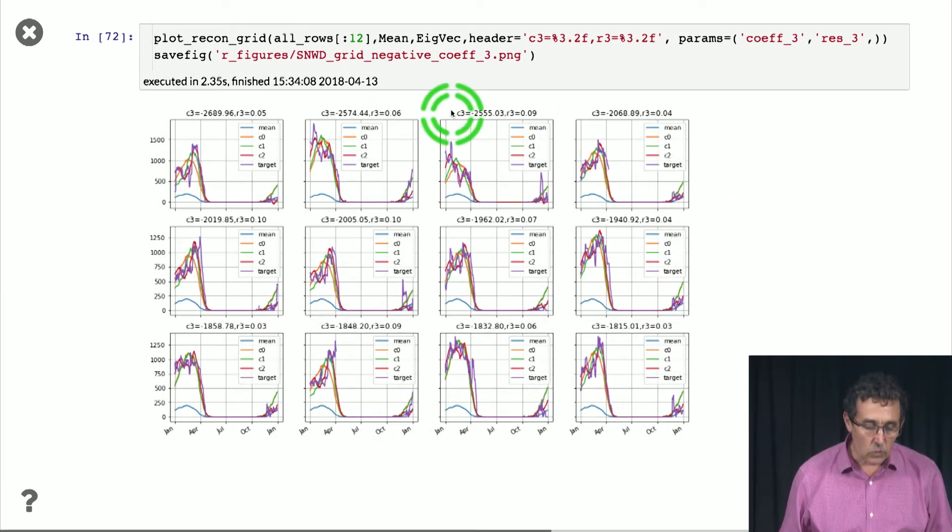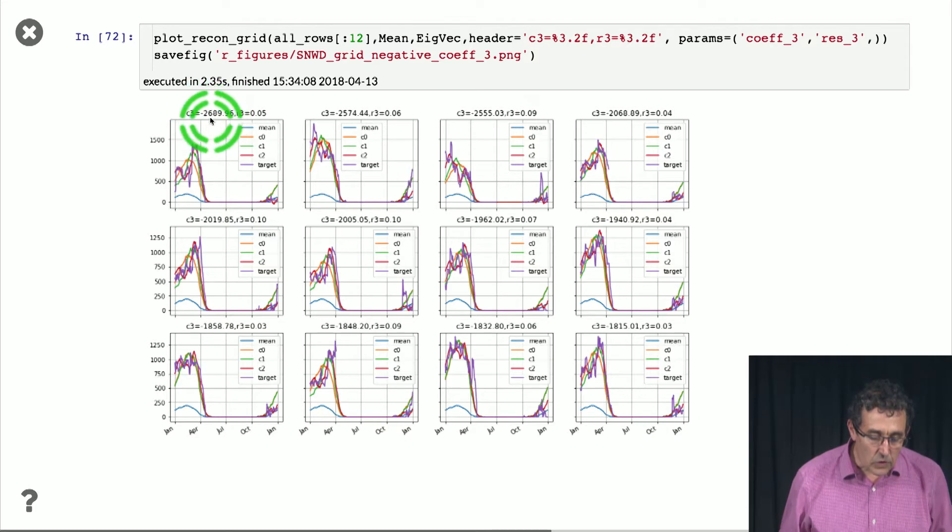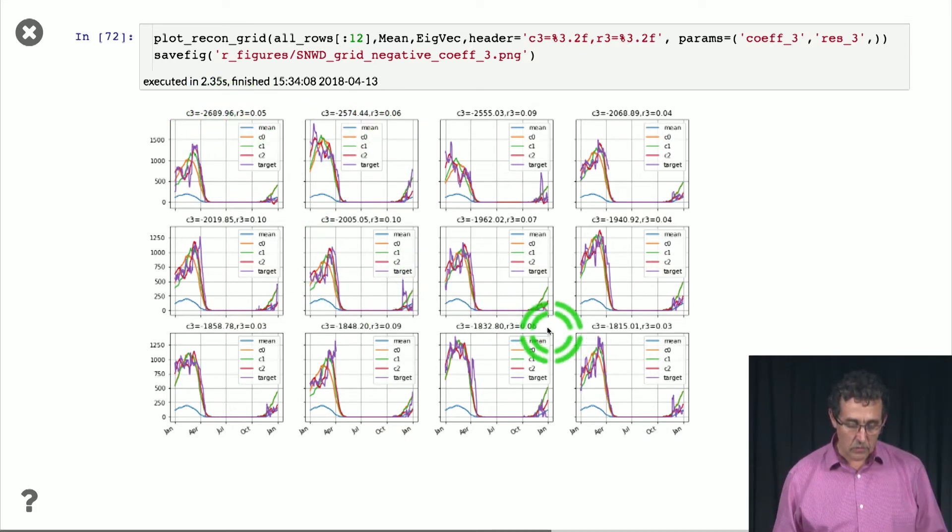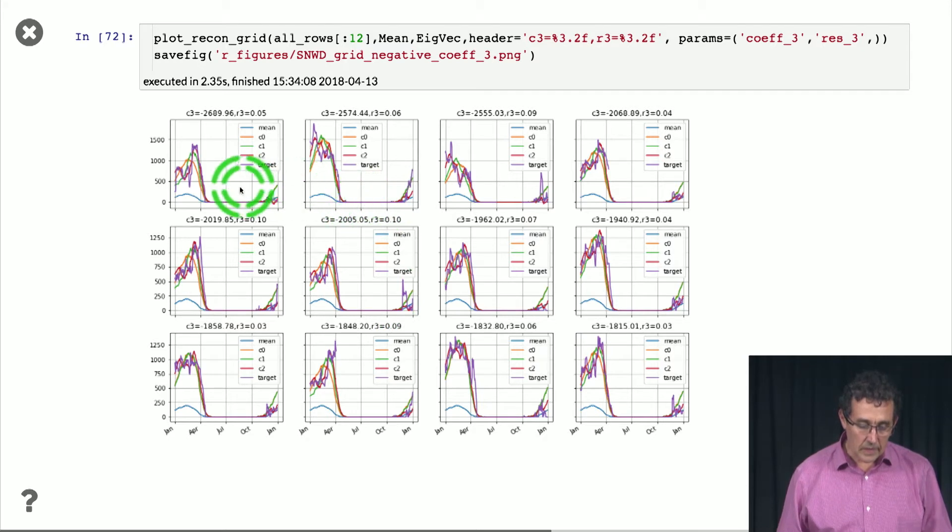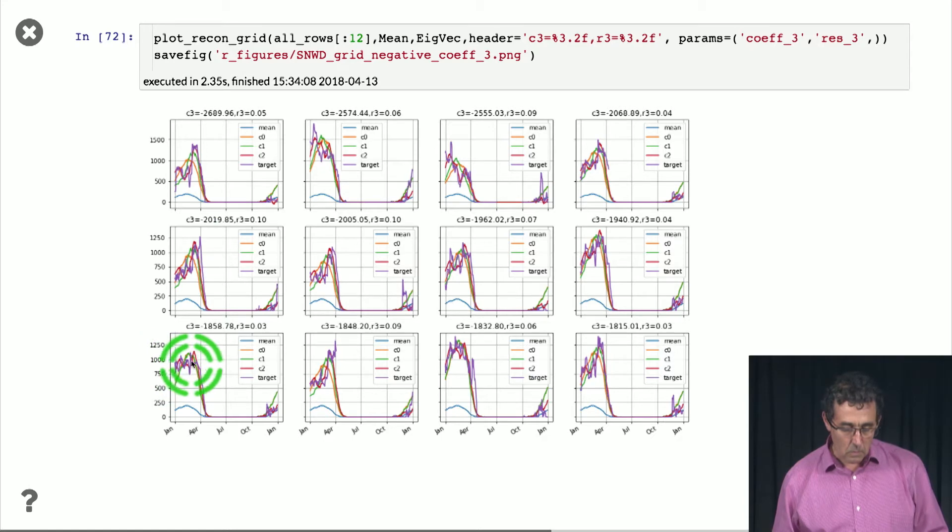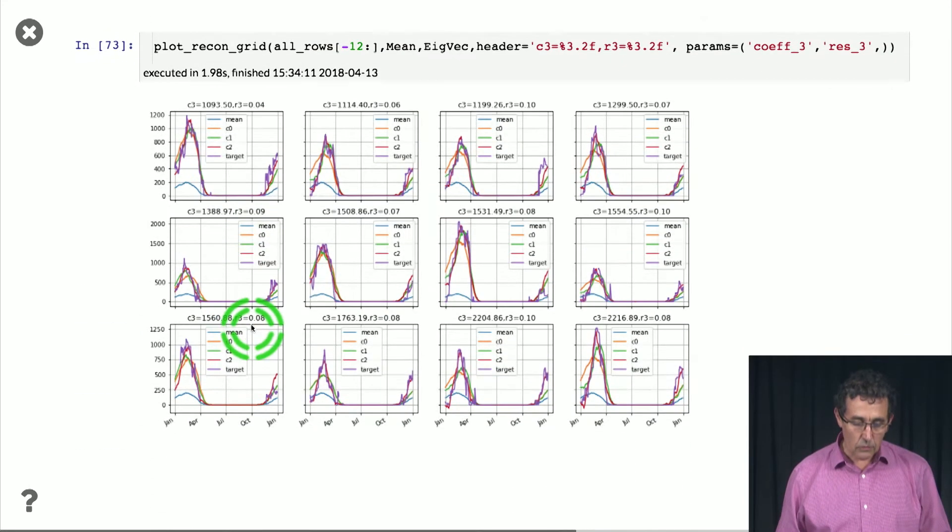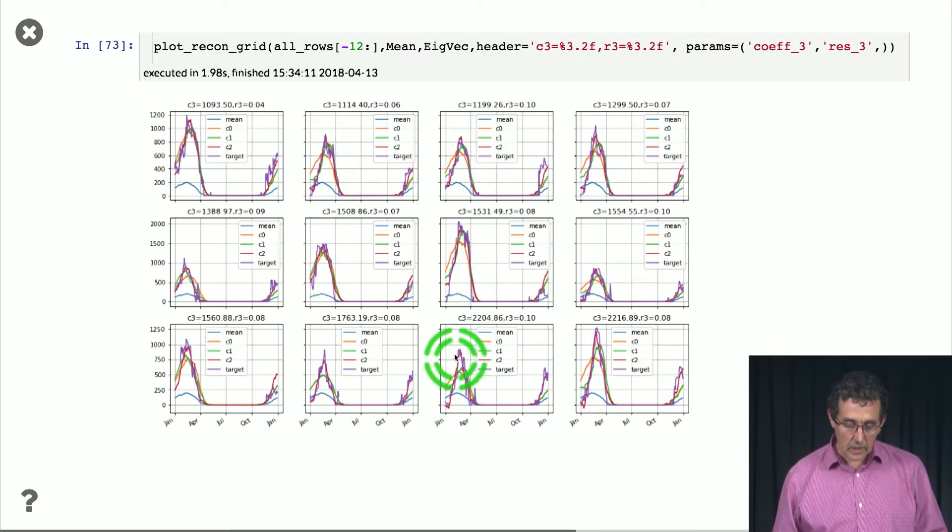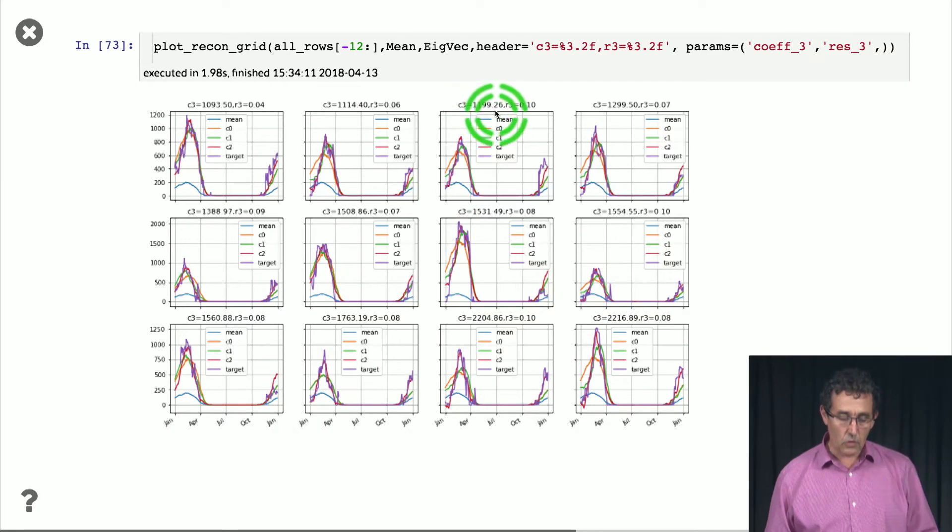And here is what we get when the coefficient 3 is very negative. Okay, so these are all the negative ones. And you see that basically the season here is relatively long, right? You see that basically it goes from early in the season to late in the season. While if we look here, the values are very large. You see the season here tends to be very short. Okay, so the season is short if the third coefficient is large.